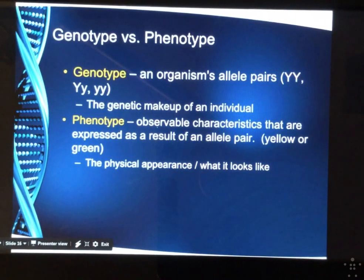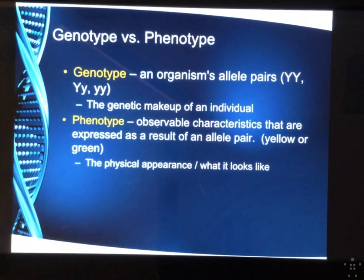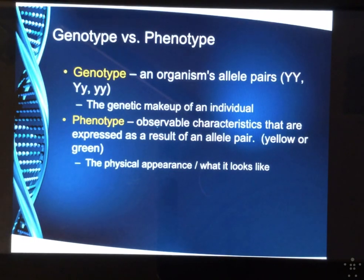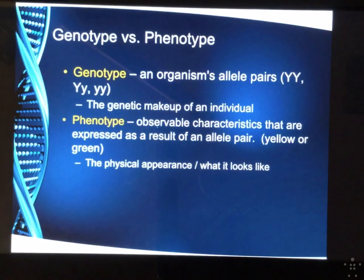On the worksheet, there was something called genotype and phenotype. A genotype is an organism's allele pairs — the actual genetic makeup of the individual. You could be big Y big Y, big Y little y, or little y little y. 'Geno' sounds like gene, so it's the actual genes possessed within you. A phenotype, on the other hand, is the observable characteristics expressed as a result of your genetic makeup — actual physical features like yellow or green. I remember phenotype because physical starts with P, and phenotype starts with P. If you can keep those straight, you are as good as gold.